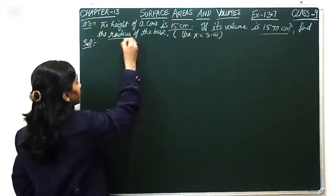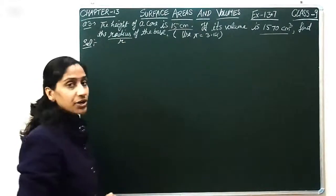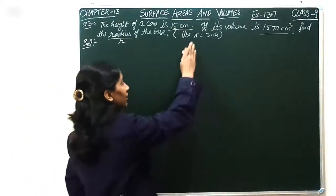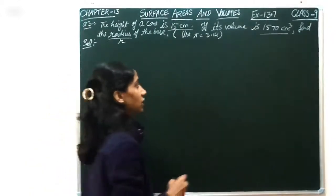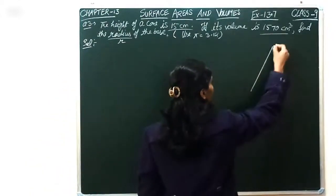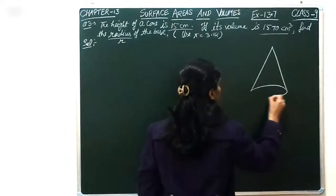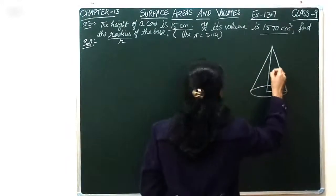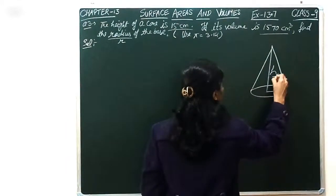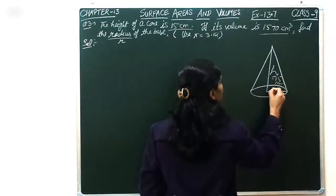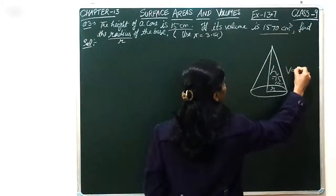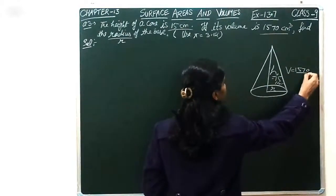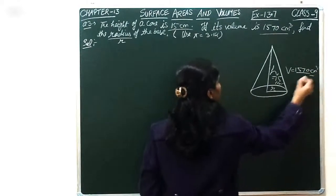We find radius of the base, that means r can be fine. Pi can be 22 upon 7, 3.14. This is a height of the cone. H can be 15 cm. This is a height of the cone is 1570 cm³.